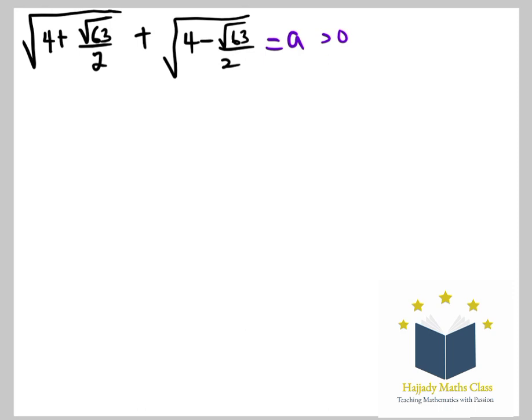So the next step is to square both sides. Squaring both sides, I'm going to have A squared equals root 4 plus root 63 over 2 plus root 4 minus root 63 over 2 all squared.